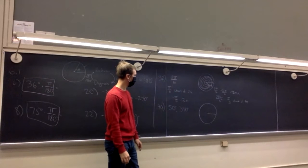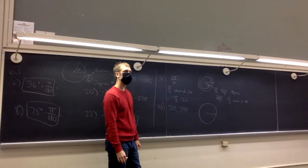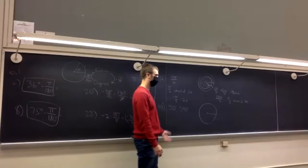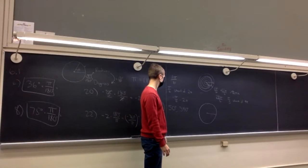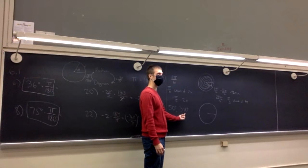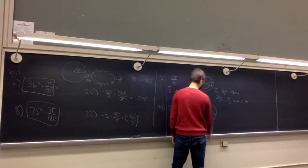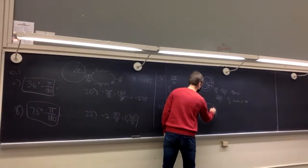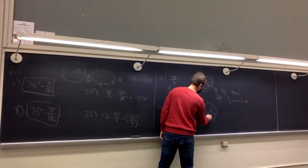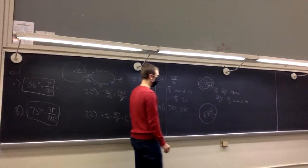Now: are 50 degrees and 340 degrees coterminal? They need to have the same ending spot. Both are positive, and for them to be coterminal one must be bigger than 360. Both are smaller than 360, so we haven't gone all the way around the circle once — they can't be coterminal. Here's 50 degrees; 340 is 20 degrees less than all the way around. Definitely not coterminal.